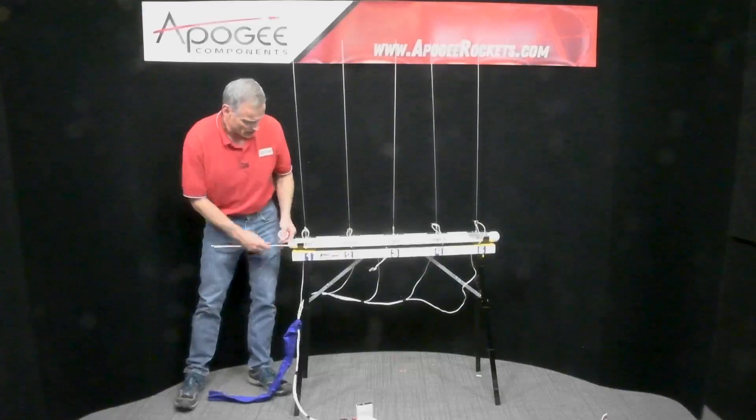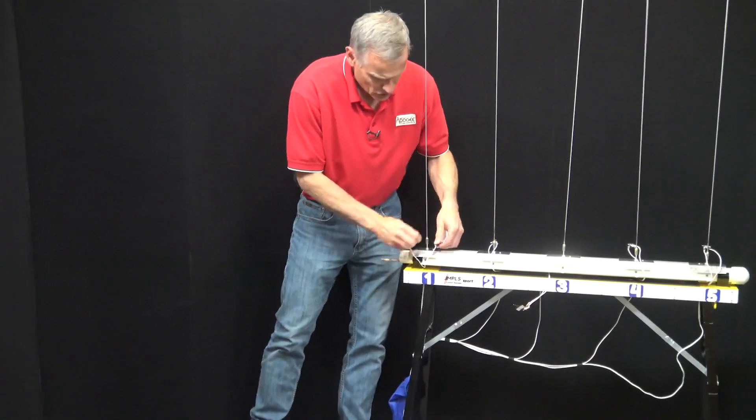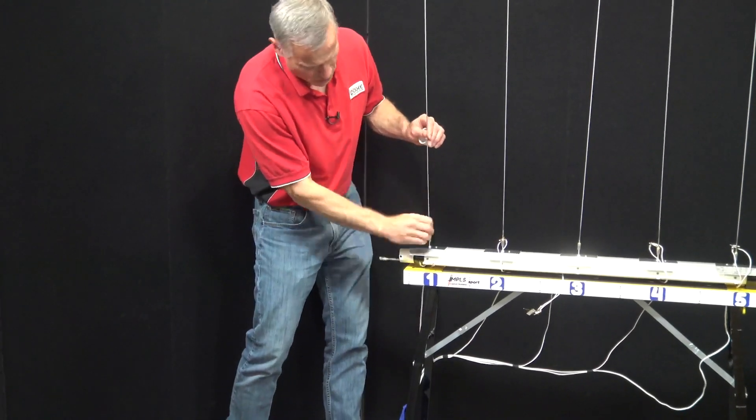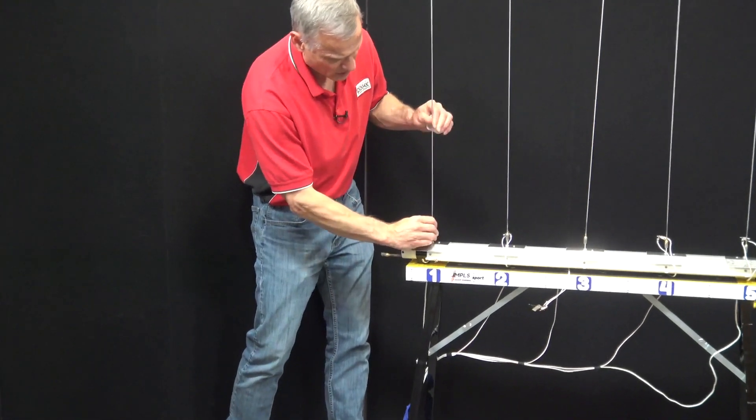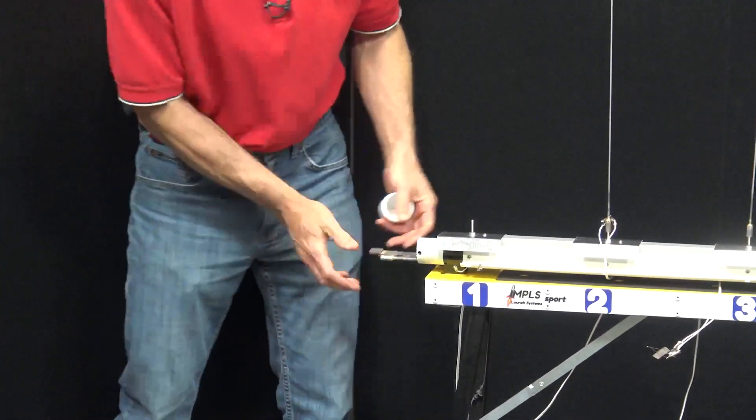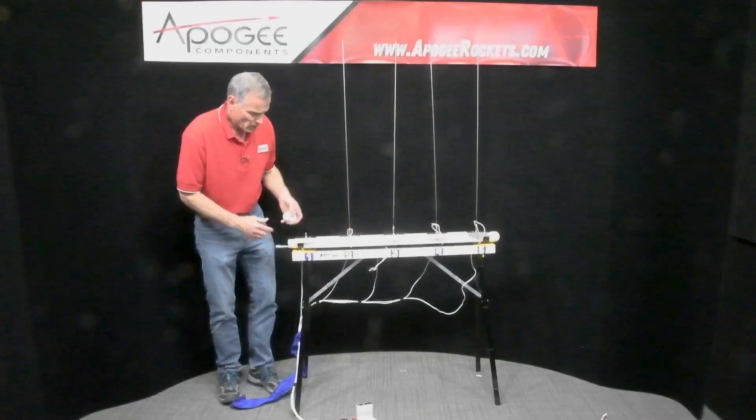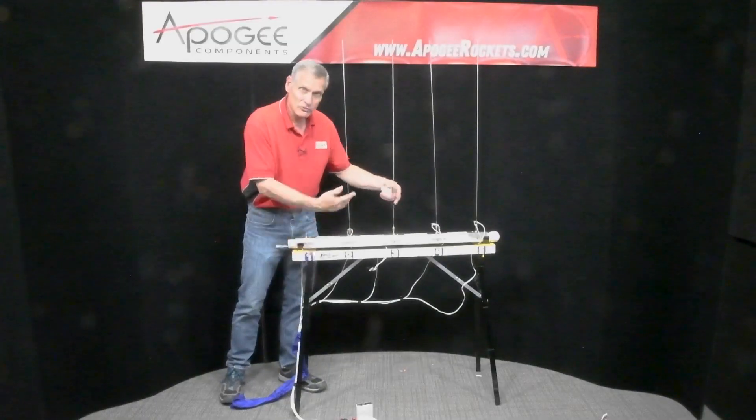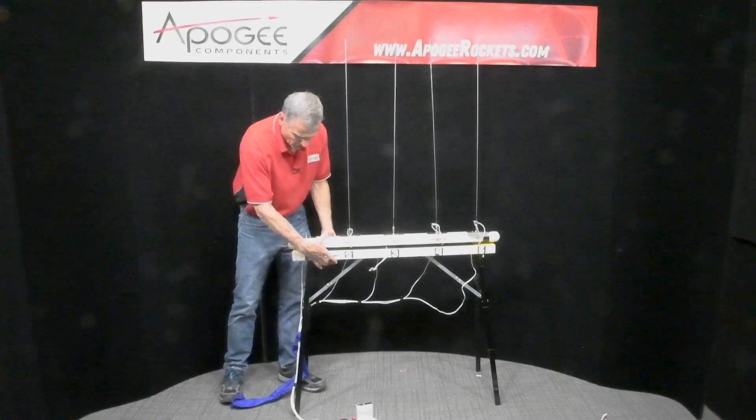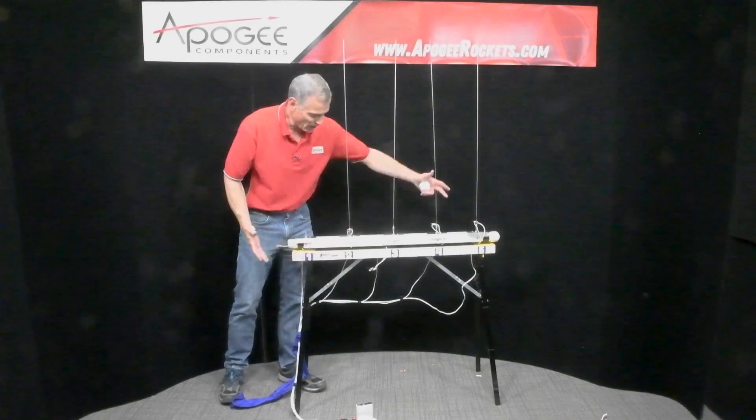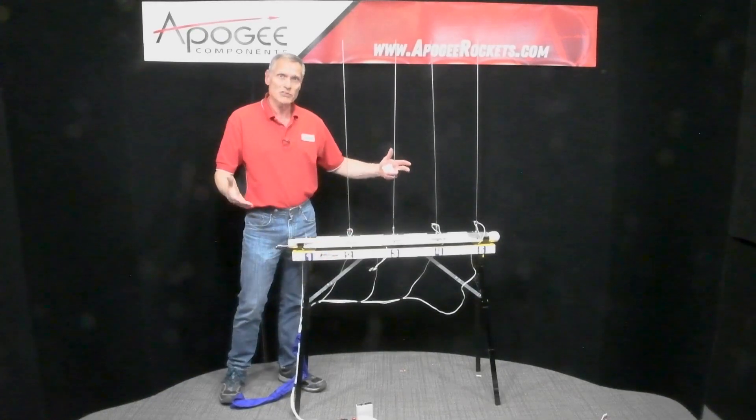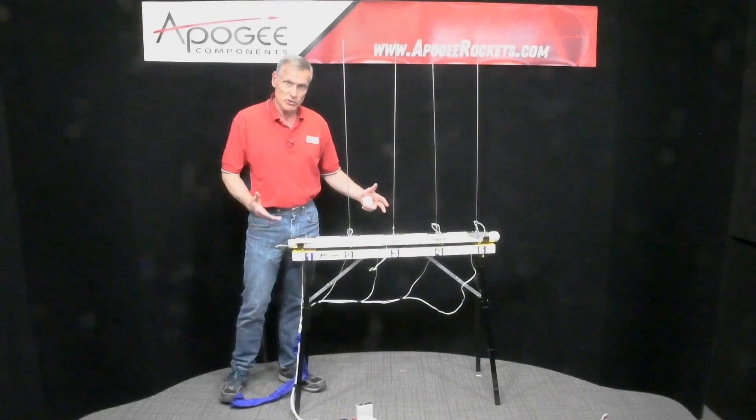And all the rods just simply unscrew from the launch pad. And for storage, you just slide them in here. The launch pad itself, once the legs fold up, stores in a bundle that's like this big and that long. And you can see it's really easy to store this system in your classroom.